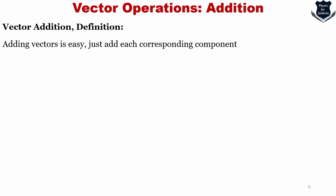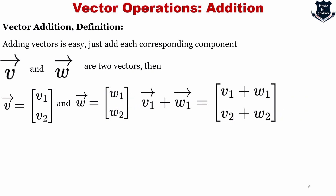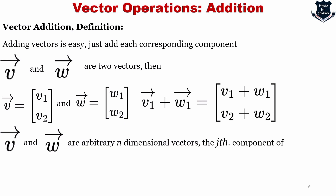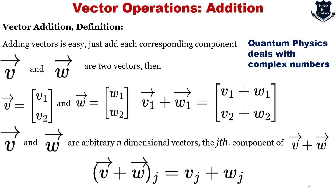Adding vectors is straightforward — you just add each corresponding component. If v = (v1, v2) and w = (w1, w2), then v + w = (v1 + w1, v2 + w2). More generally, for arbitrary n-dimensional vectors, the j-th component of v + w is simply vj + wj — we are adding the j-th component of v and the j-th component of w.